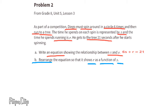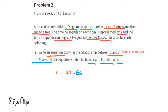Part b: rearrange the equation so that it shows R as a function of S. That means rewriting the equation as if solving for R. To move the 6s to the other side of the equal sign, we subtract 6s from both sides. That gives us R equals 21 minus 6s, or R equals negative 6s plus 21.